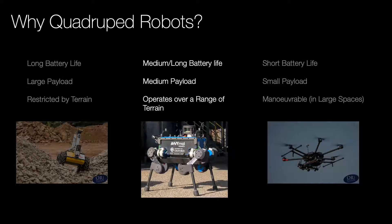We choose quadruped robots as they inhabit an operational sweet spot between wheeled robots and drones. A quadruped robot has comparable battery life and payload to a wheeled robot, which is far superior to that of drones, whilst quadrupeds also operate in a far broader range of environments. However, they are more complicated to control.